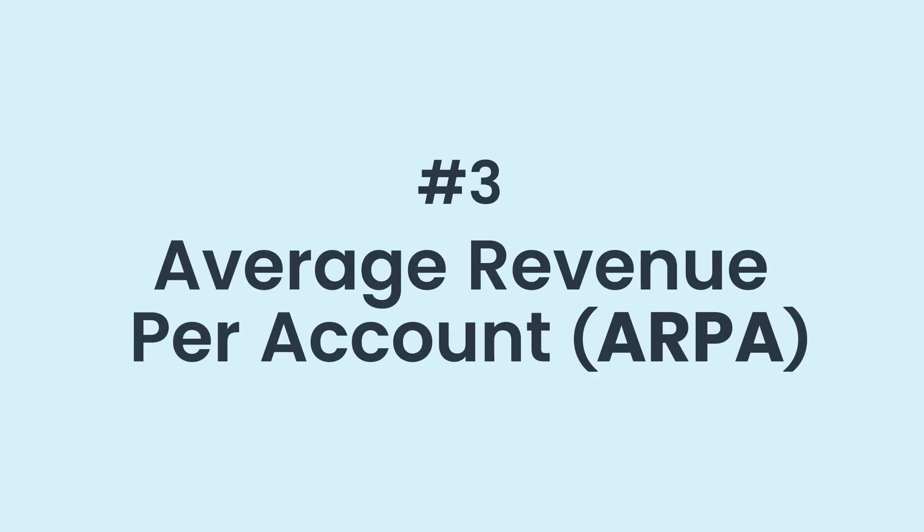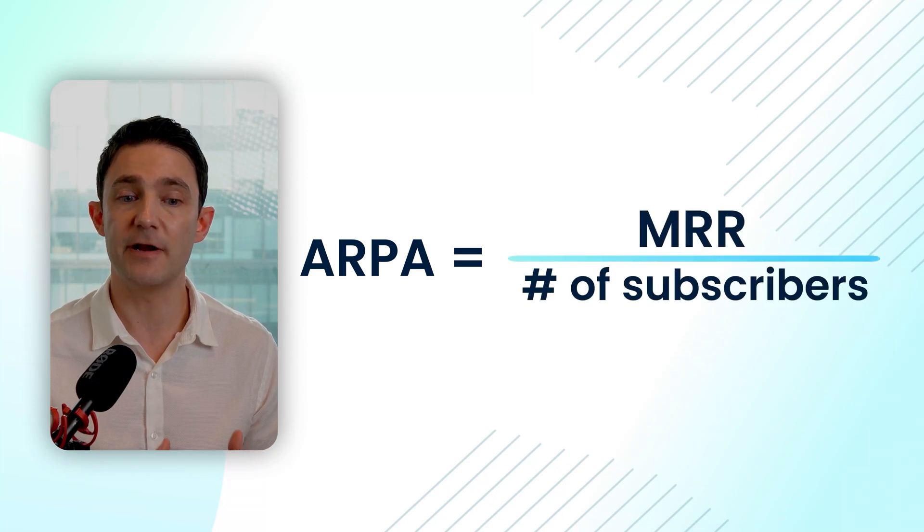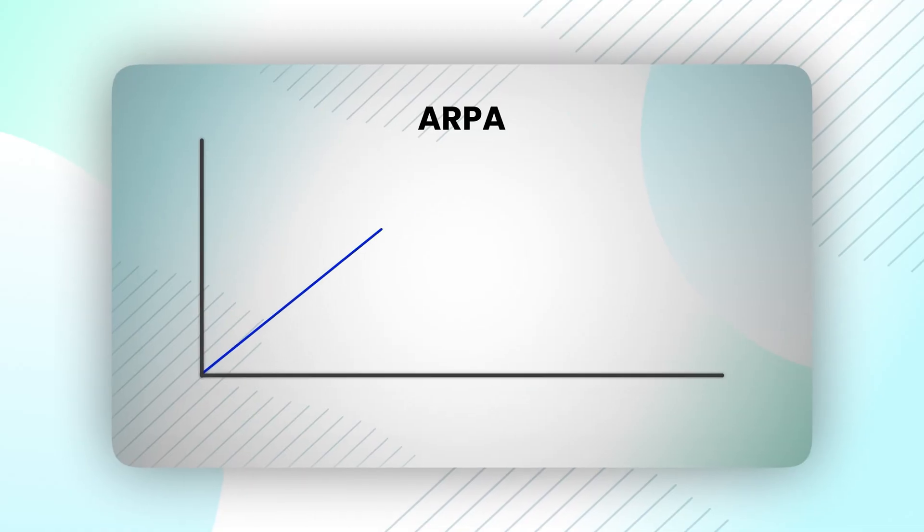The next metric is ARPA — average revenue per account. That means how much your average customer from your active subscriber base is paying you per month. It's really simple to calculate: take your current MRR and divide it by your current active number of paid subscribers. It's a simple metric but can be useful to understand the impact of pricing changes — will that drive ARPA up or down? — and the impact of expansion revenue over time.